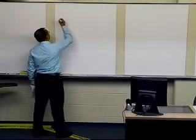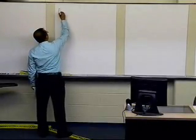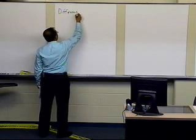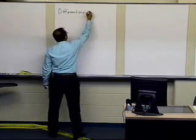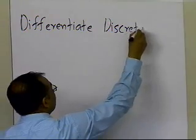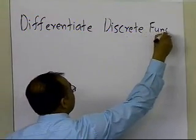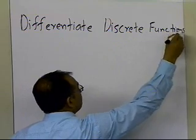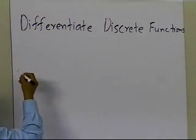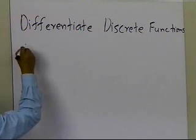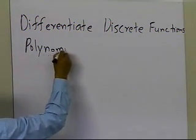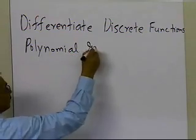In this segment, we're going to talk about how to differentiate discrete functions. So we are given the value of the function at only certain specific points — a finite number of points, not as a continuous function — and we want to find out what the value of the derivative of the function is. The method we're going to talk about here is the polynomial interpolation method.